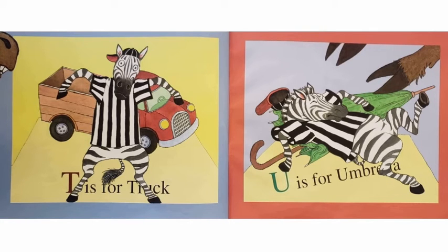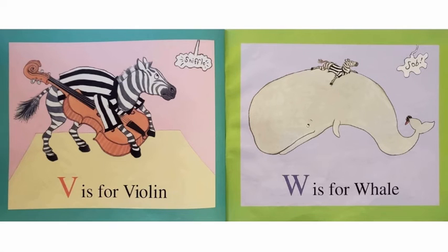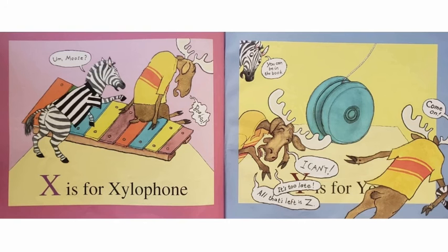S is for Moose. T is for Truck. U is for Umbrella. V is for Violin. Sniffle. W is for Whale. Sob.